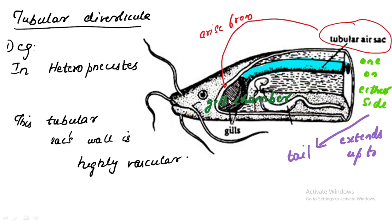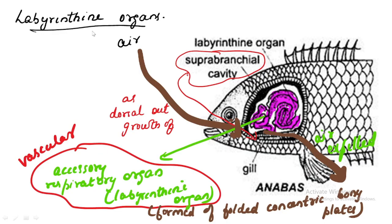The tubular sac wall is highly vascular. It arises from the gill chamber — the chamber carrying the gills — and the tubular sac extends up to the tail. With the help of this sac, the fish takes in atmospheric air.